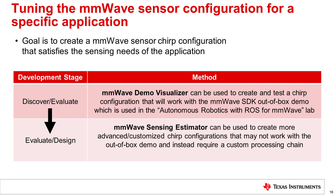TI provides two main methods for creating chirp configurations. The first is more applicable to the initial discovery and evaluation development stages and uses the millimeter wave demo visualizer tool described in the first portion of this training. This method can be used to quickly create and test a chirp configuration that will automatically work with the millimeter wave SDK out-of-box demo, which is used in the Autonomous Robotics with ROS for millimeter wave lab.